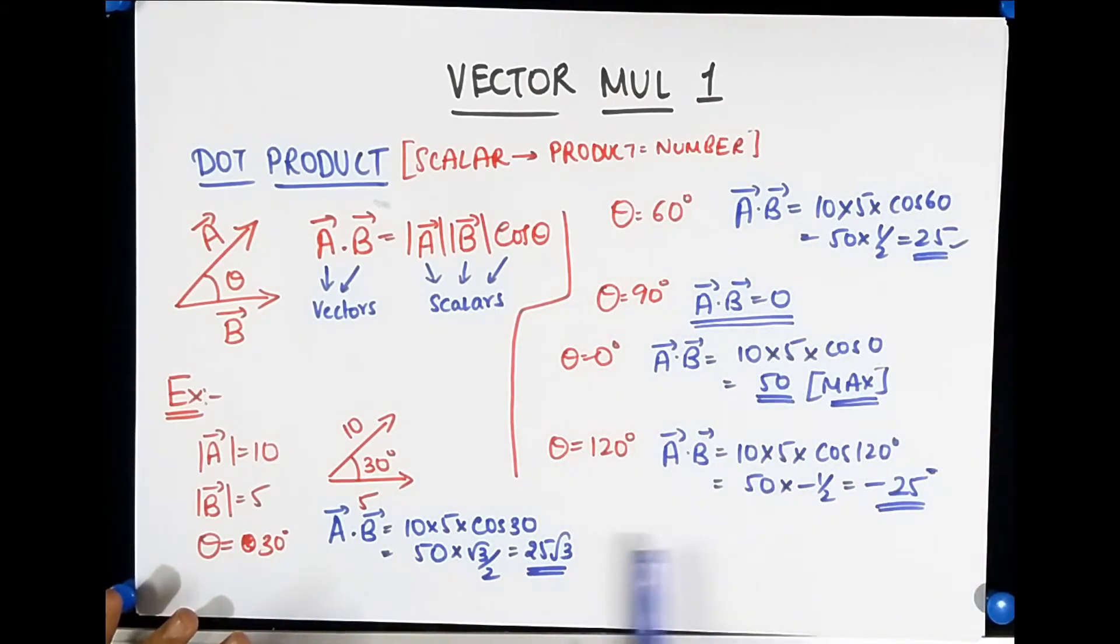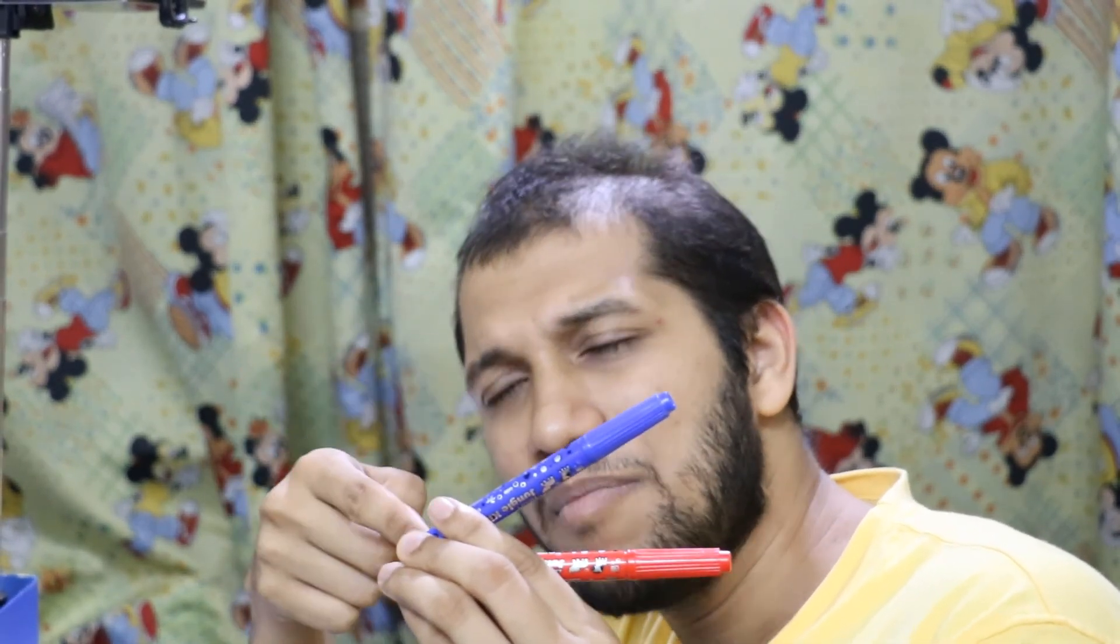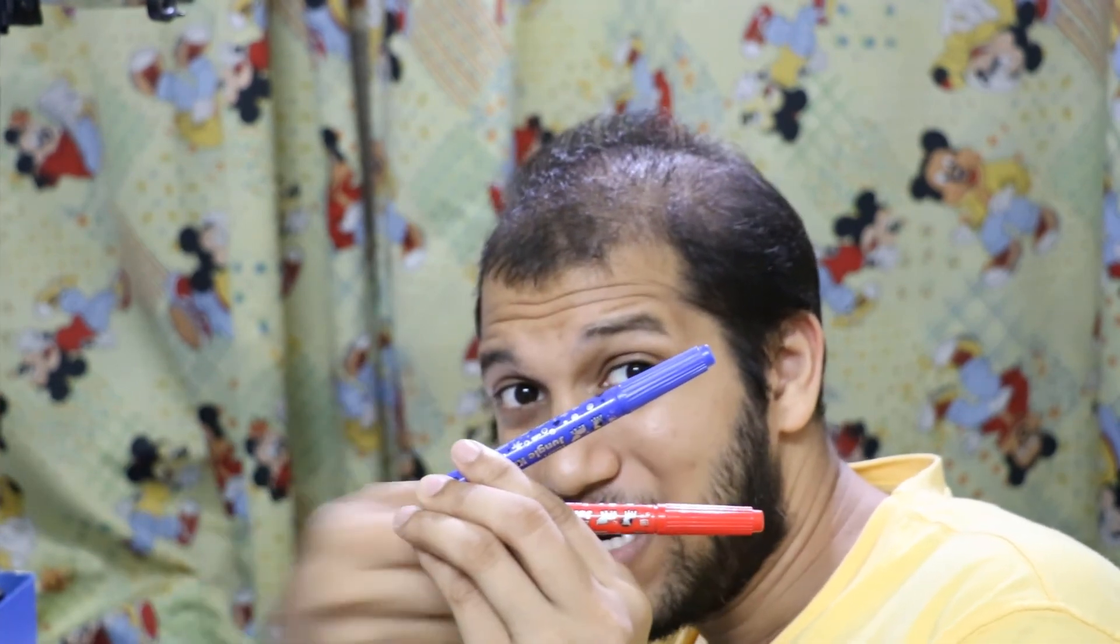Well, what you need to understand from all of this is that dot product is trying to tell you how parallel two vectors are. Think about it, when two vectors are exactly parallel to each other, dot product becomes maximum. When the two vectors have some angle, the dot product still has some number. Why? Because remember, this vector has some component in this direction. It has some component in this direction, and that's why there is still some parallelism left.